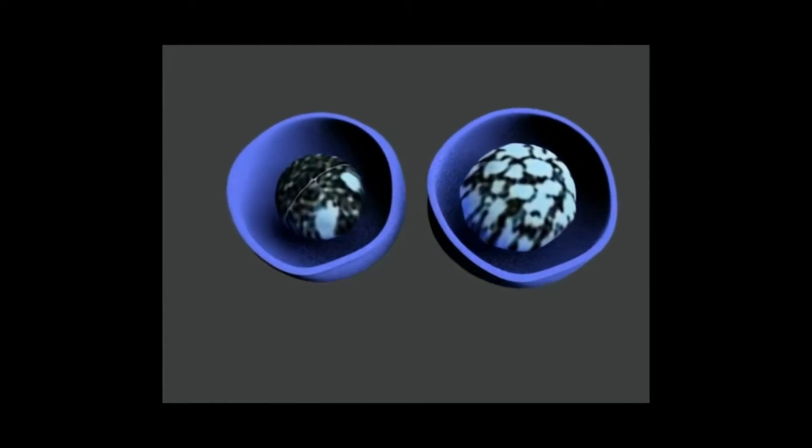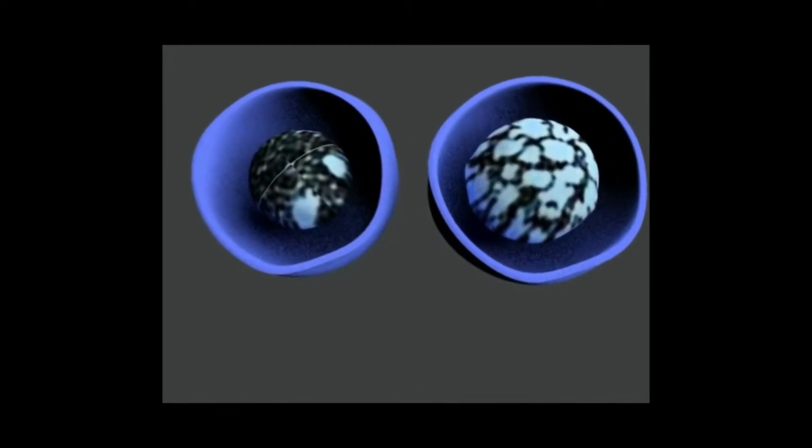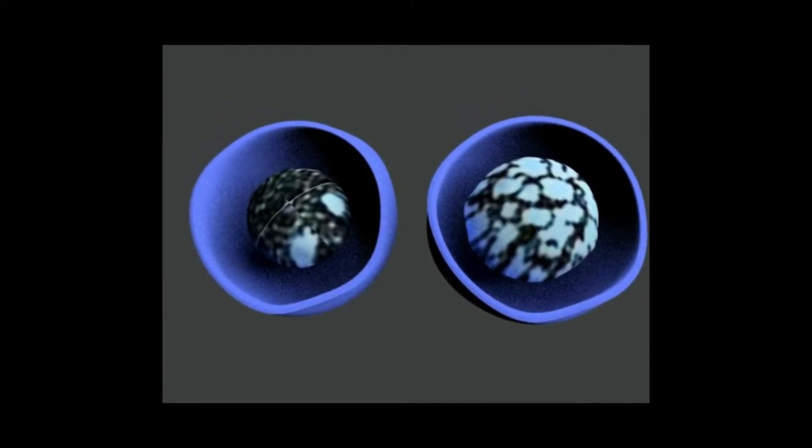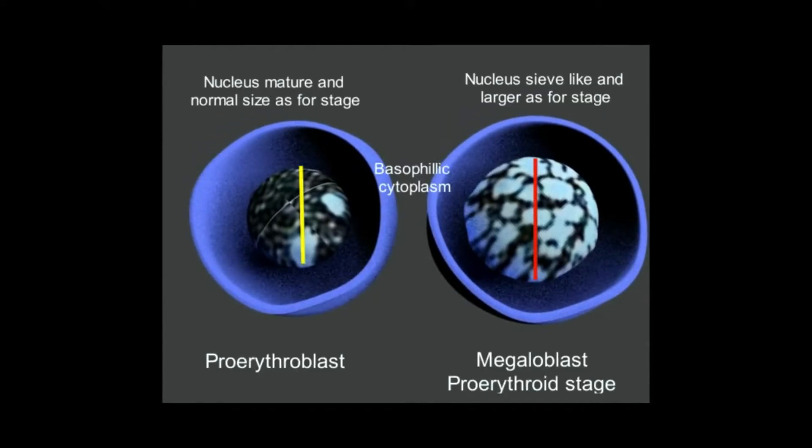For better understanding, I am placing two cells side by side to reveal the larger nucleus size with the sieve-like chromatin of the megaloblastic cell on the right as compared to the normal erythroid precursor cell of the same stage which is pro-erythroblast in this case.